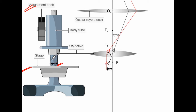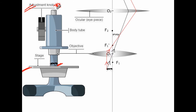Here we have two lenses. One lens which is nearer to the object is called the objective lens. The lens which is nearer to the eye of an observer is called the eyepiece.